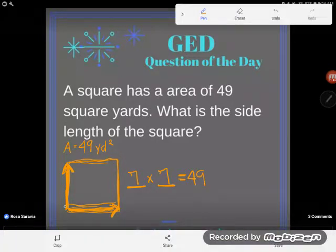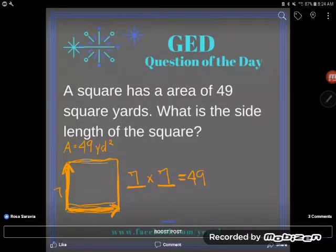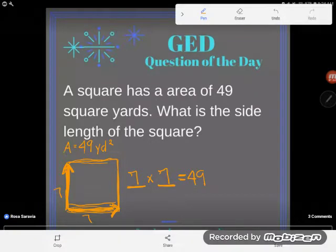Since area is found by multiplying the length and width together, and if it's a square it's the same number, the only way I'm going to get 49 out of multiplying the same number by itself is if I have 7 by 7. And so I can see that a side length of this square is 7.